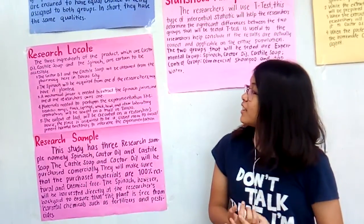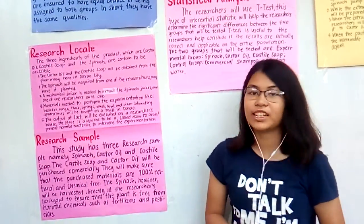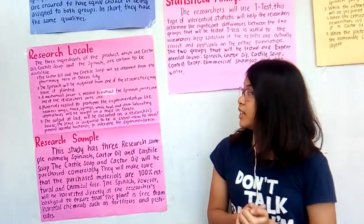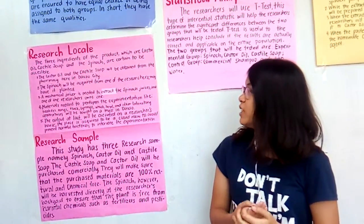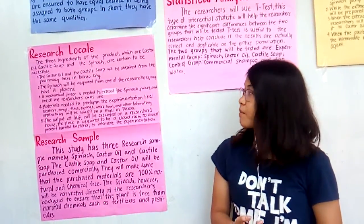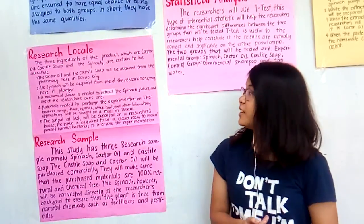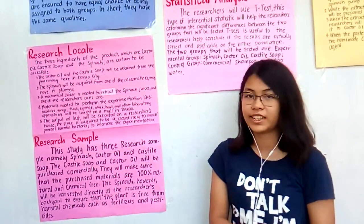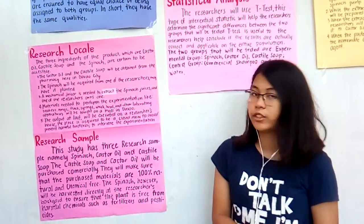The castor oil and castile soap will be obtained from the pharmacy here in Davao City. The spinach will be acquired from one of the researchers. They have it planted. A mechanical juicer is needed to extract the spinach juices, and one of the researchers owns one.